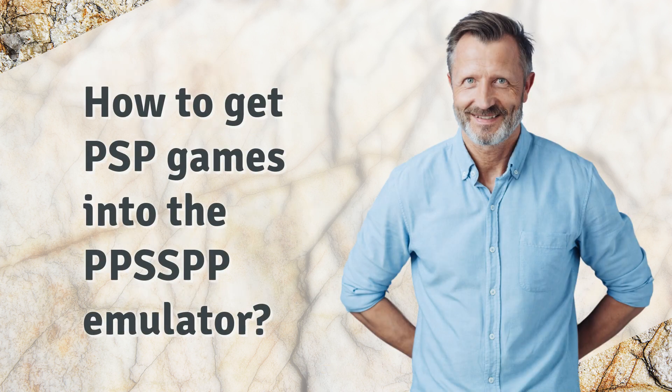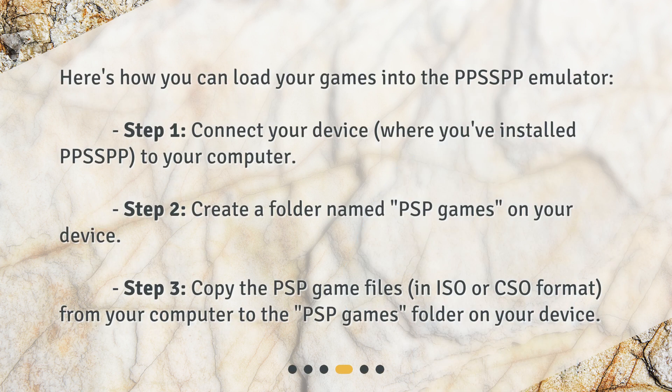Here's how you can load your games into the PPSSPP emulator. Step 1: connect your device, where you've installed PPSSPP, to your computer. Step 2: create a folder named PSP games on your device. Step 3: copy the PSP game files in ISO or CSO format from your computer to the PSP games folder on your device.